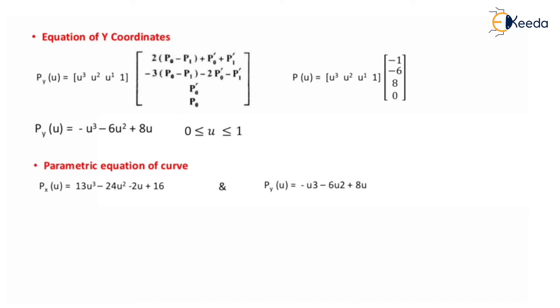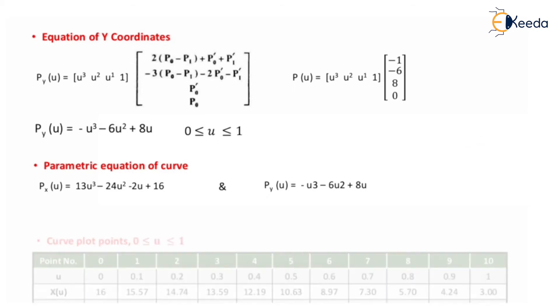So the parametric equations of the curve are: along x, Px(u) = 13u³ - 24u² - 2u + 16; and along y, Py(u) = -u³ - 6u² + 8u.